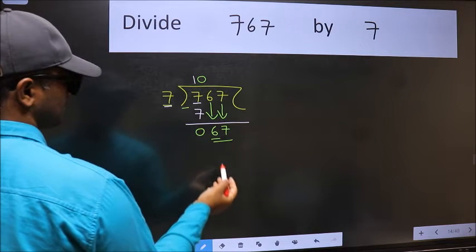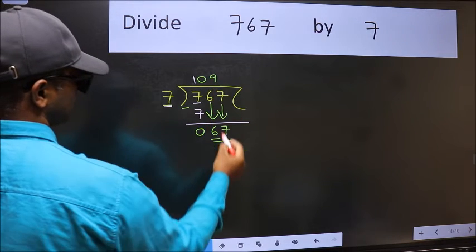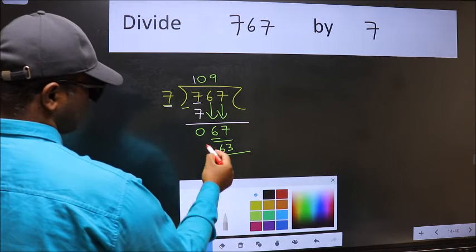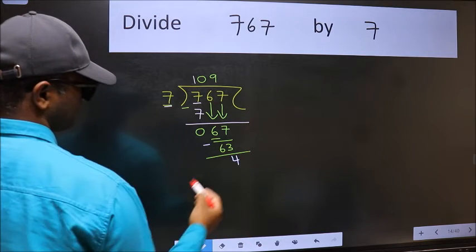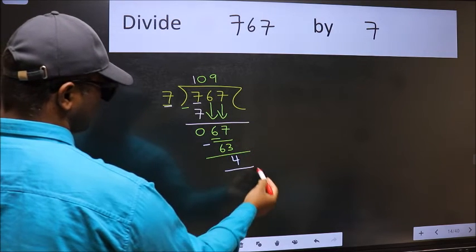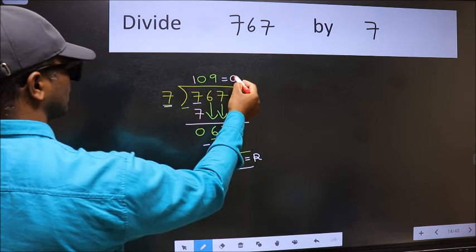Now 67. A number close to 67 in the 7 table is 7 nines, 63. Now we should subtract, we get 4. No more numbers to bring it down, so we stop here. This is our remainder and this is our quotient.